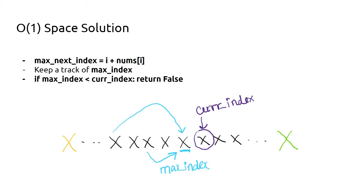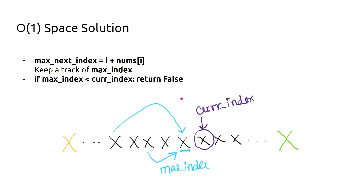Now let's focus on the maximum next index value. Recall that from index i we can jump to a maximum index of i plus nums[i]. Instead of storing an entire DP list, we only track this single maximum index. This boundary tells us everything we can explore. If you can reach this maximum index, you can most definitely reach all indices before it, because the same value that could jump to the maximum could also reach all intermediate positions.